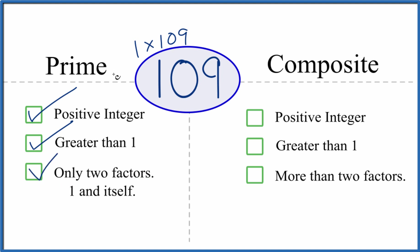Because of that, 109 is a prime number. Is it a composite number, though? It's a positive integer, it's greater than 1. But are there more than two factors? We just said there's only two.